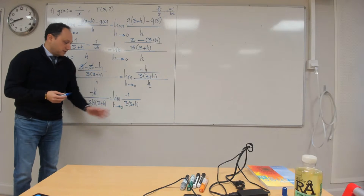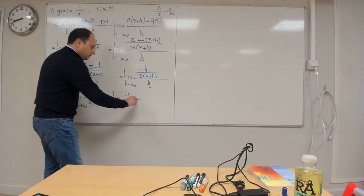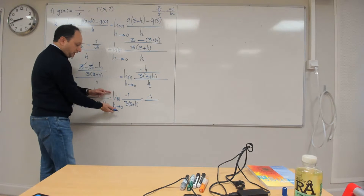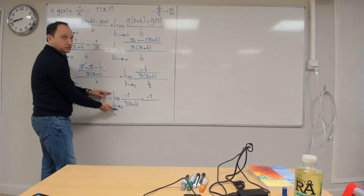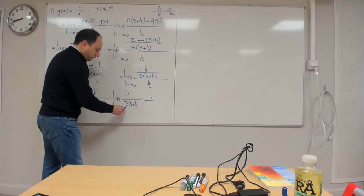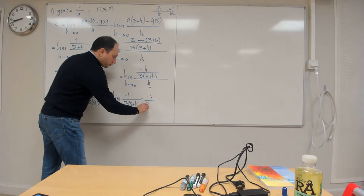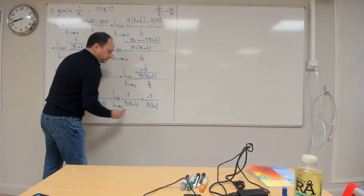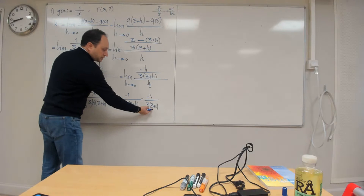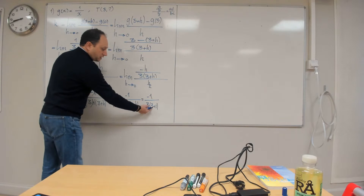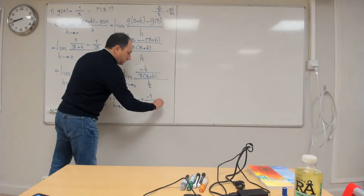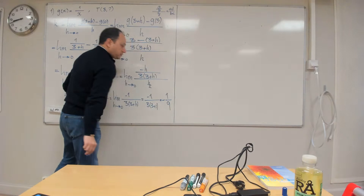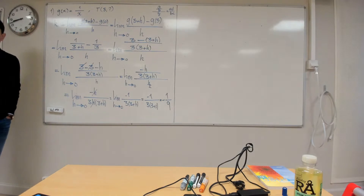I need to simplify things if possible. If I have a fraction divided by another fraction, you can multiply the numbers far away from each other and put it in the numerator, then multiply the numbers close together and put them in the denominator. So 1 times minus h becomes minus h in the numerator, divided by h multiplied by 3 times (3 plus h), so the denominator becomes 3h(3+h).